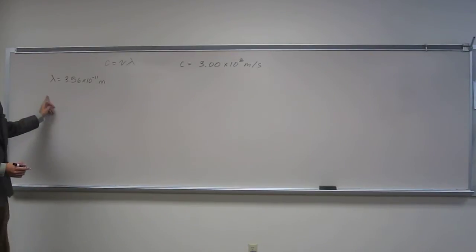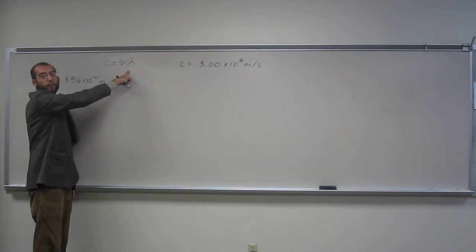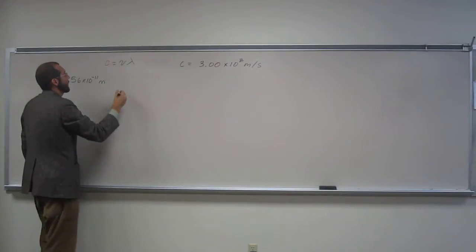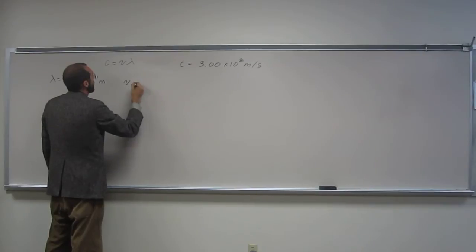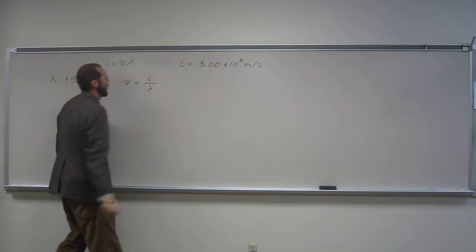So what are we looking for? It says frequency, right? So we're going to have to rearrange this equation to isolate the variable frequency. In order to do that, we get nu equals the speed of light over lambda.